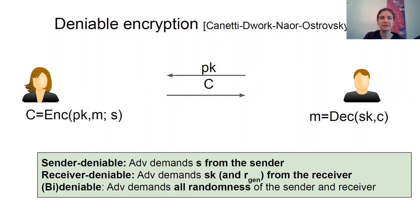The original paper considers three different cases of deniability depending on which party gets coerced. In this work, we are considering the strongest case, when both parties can get coerced. Note that in this case it is very important that both parties claim the same fake plaintext, otherwise the adversary can easily tell that they do not align.